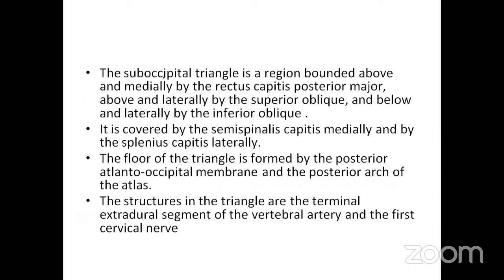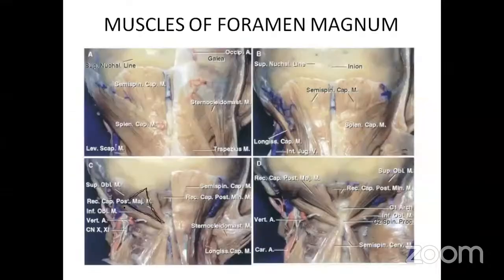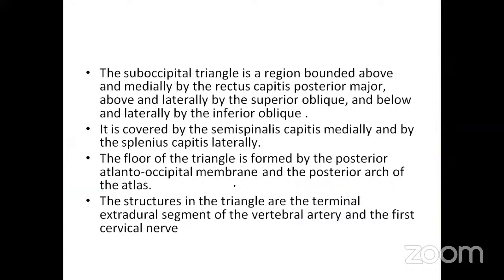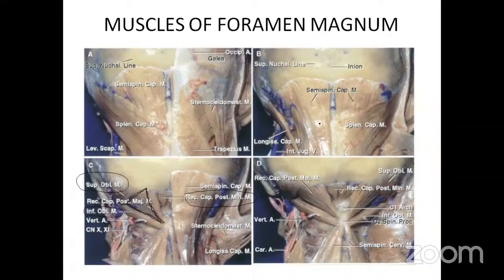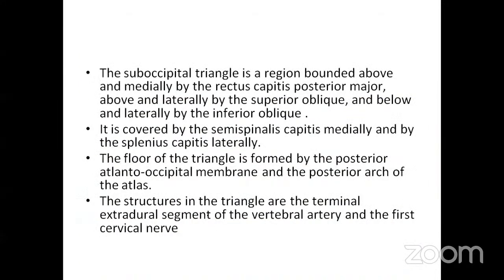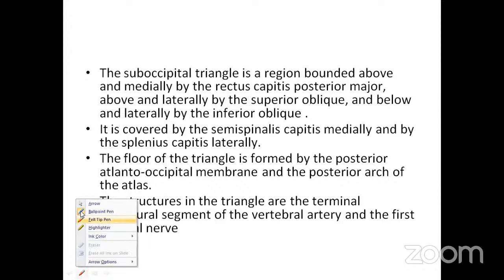The suboccipital triangle is bounded above and medially by rectus capitis posterior major, above and laterally by the superior oblique, and below and laterally by the inferior oblique. It is covered by semispinalis capitis medially and splenius capitis laterally. The floor is formed by the posterior atlantooccipital membrane and posterior arch of the atlas. The key structures within the triangle are the terminal extradural segment of the vertebral artery and the first cervical nerve — making this triangle surgically important.